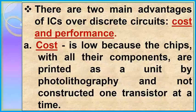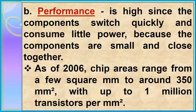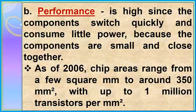There are two main advantages of ICs over discrete circuits: cost and performance. Cost is low because the chips, with all their components, are printed as a unit by photolithography and not constructed one transistor at a time. Performance is high since the components switch quickly and consume little power because the components are small and close together. As of 2006, chip areas range from a few square millimeters to around 350 mm squared, with up to 1 million transistors per mm squared.